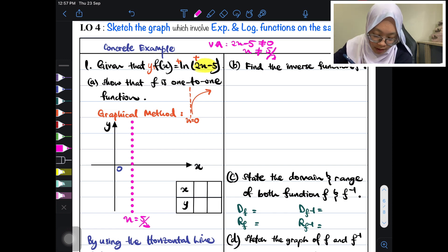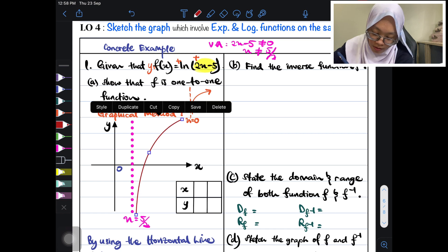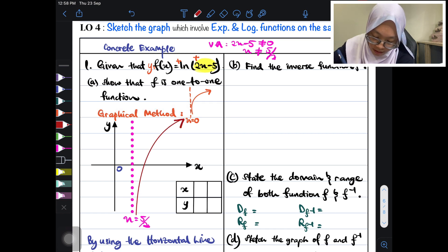So asymptote dia, let me draw by using the pink colour here, very big dotted line there. So this is the asymptote, x is equals to 5 over 2. And then the graph akan terlukis begini, going to the first quadrant. The graph is going to the first quadrant and then you labelkan f(x) is equals to ln(2x minus 5). There you go, that's your graph.